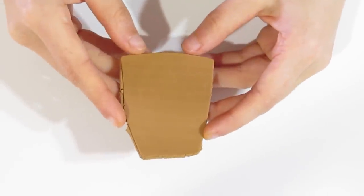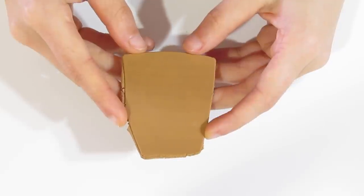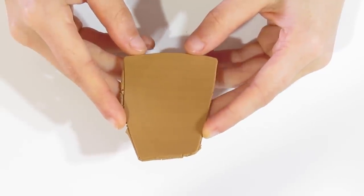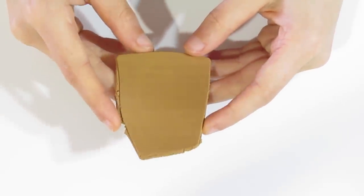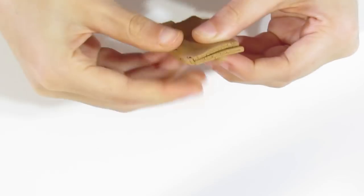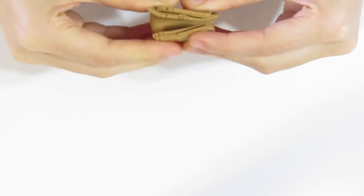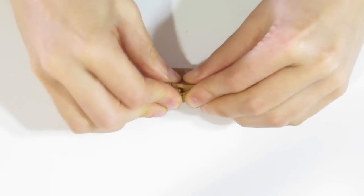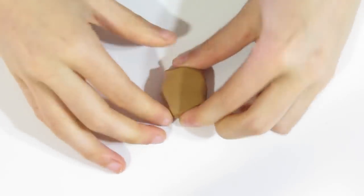Then I want you to mix two parts Ecru to one part Burnt Sienna and you should come out with this color. And then once you've got that, just fold that so that it becomes a nice big chunk of clay.